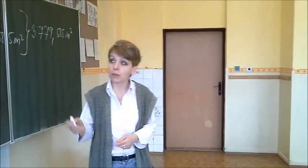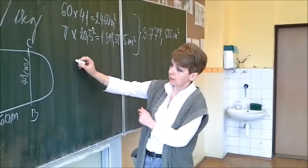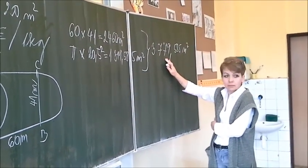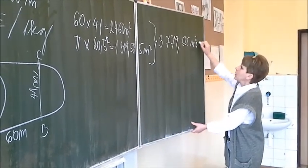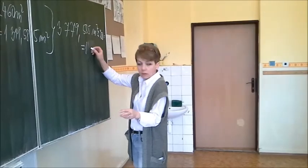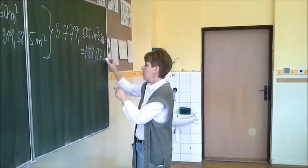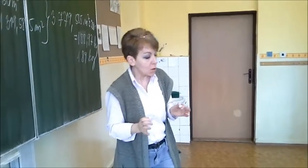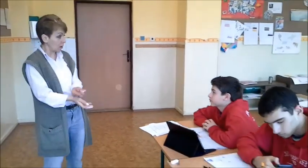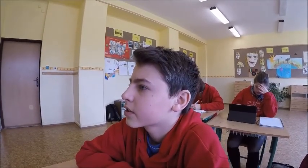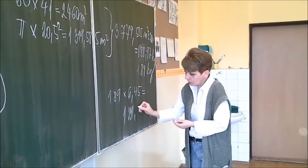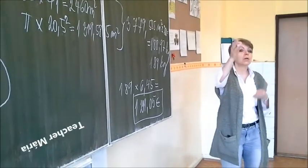Now we are going to use this information. We know that one kilogram of grass is necessary for 20 square meters. So: 3779.585 ÷ 20 = 188.97, which rounds to 189 kilograms. We know that one kilogram of grass costs 6.45 euros. So: 189 × 6.45 = 1219.05 euros total.